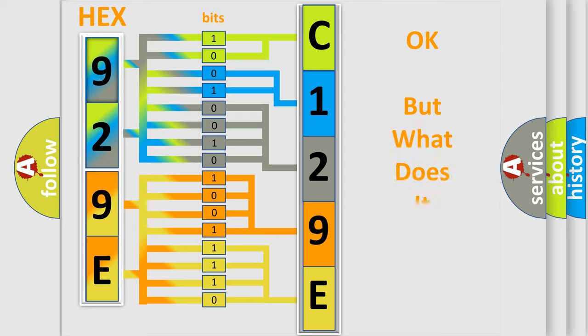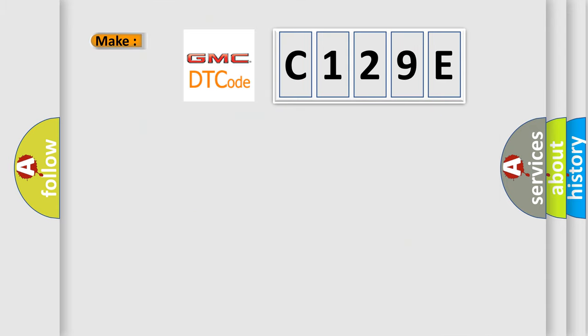The number itself does not make sense to us if we cannot assign information about what it actually expresses. So, what does the diagnostic trouble code C129E interpret specifically for GMC car manufacturers?